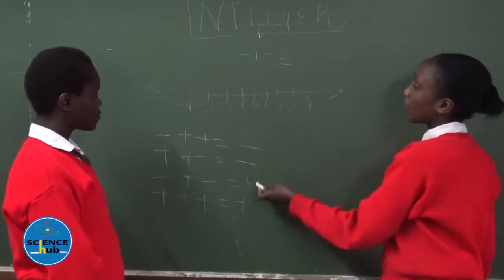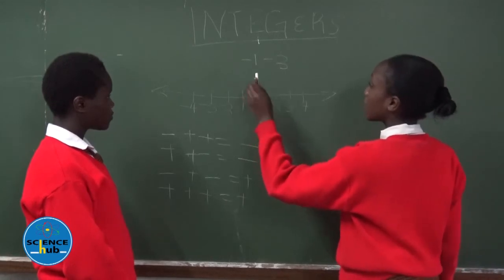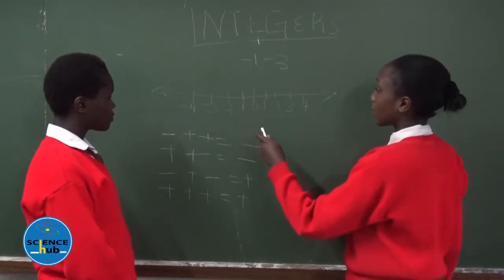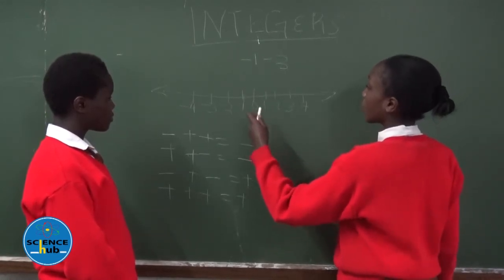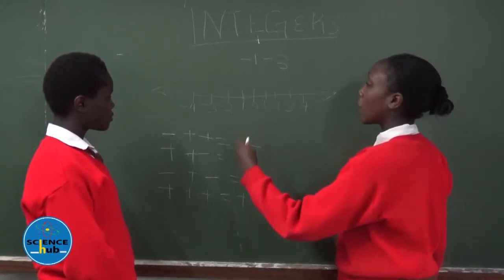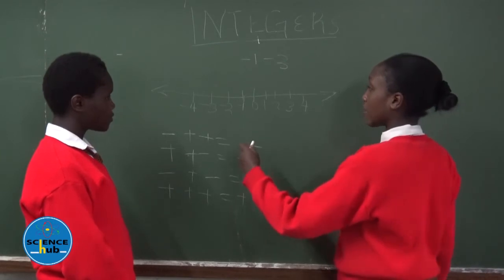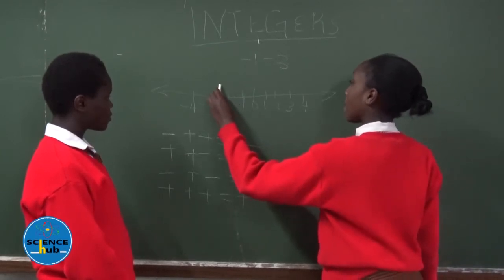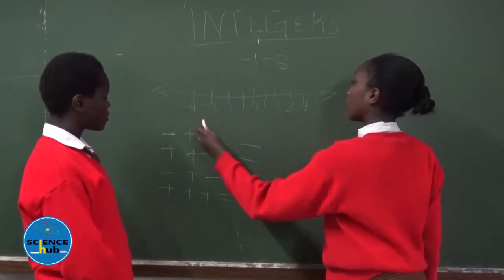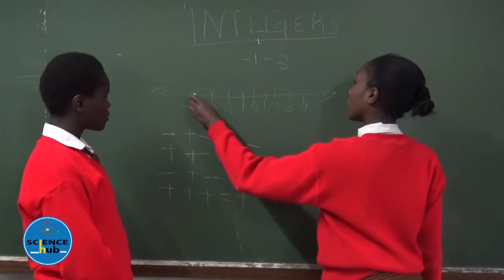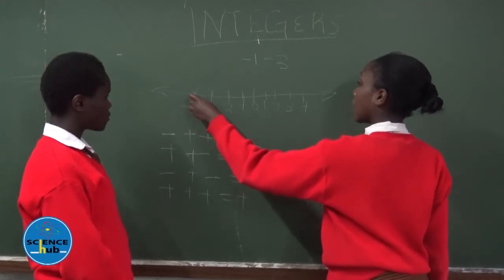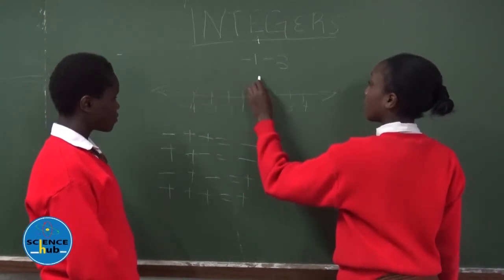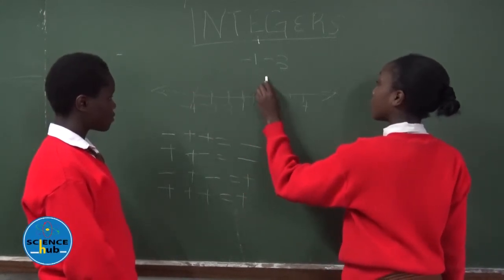When you have negative 1, this means that you subtract 3. So, you move backward three steps. This means that you have negative 4. So, your answer will be negative 4.